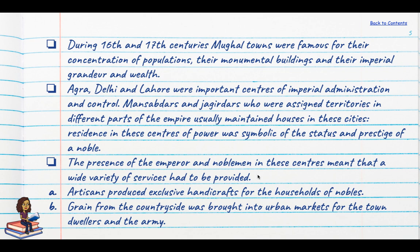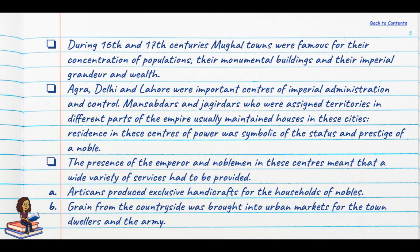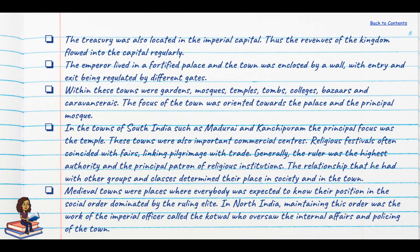The presence of the emperor and noblemen in these centres generated a lot of employment — artisans produced exclusive handicrafts for noble households, grain from the countryside was brought into urban markets for town dwellers and the army, and the treasury was located in the imperial capital. The emperor himself lived in a fortified palace — we still see the Lahore, Delhi and Agra forts today — and entry and exit to these cities was regulated by different gates.